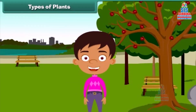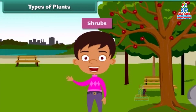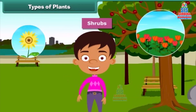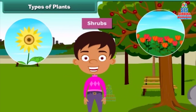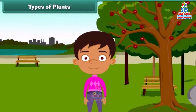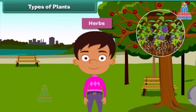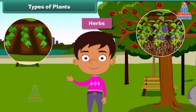Plants which are smaller than trees are called shrubs, such as rose and sunflower plant. Besides, some plants are very small and are called herbs. Brinjal and spinach are examples of herbs.